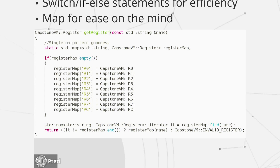So I made this method called getRegister. It takes a string, and the first time this runs, it populates a static instance of the map with the strings and the corresponding enum values. Most of the function is just looking up the name in the register map and returning it. If I can't find it, it returns the enum value called invalid_register. Now, here's the follow-up question: how would I do this in D?